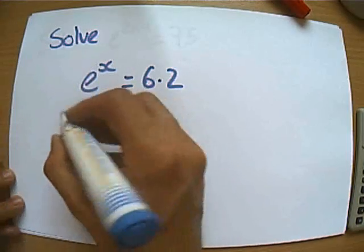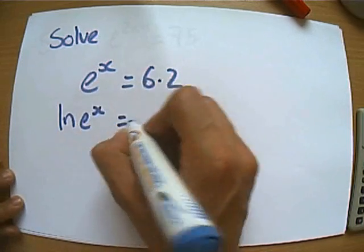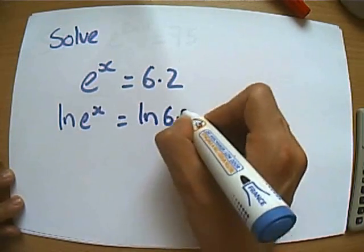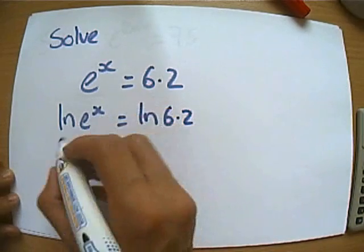ln of e to the x is equal to ln of 6.2. Now we've got ln of something to the power of something, we can bring the power down the front.